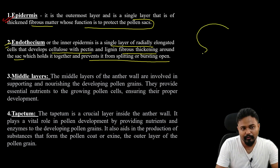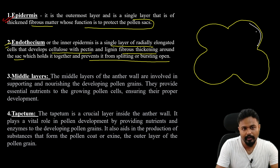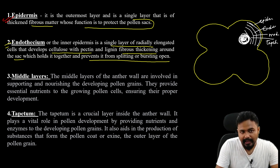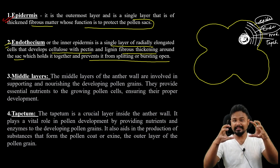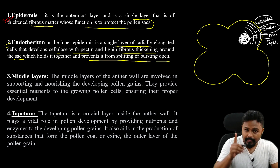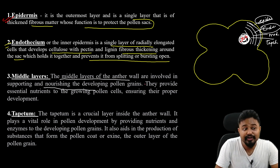We are going into the outer structure of the anther. The upper layer is the epidermis, then endothecium, then middle layer, then tapetum. Epidermis provides protection; endothecium helps manage and prevent bursting open. The middle layer of the anther is involved in supporting and nourishing the developing pollens.